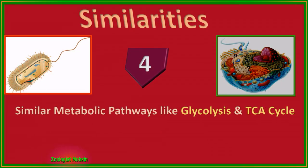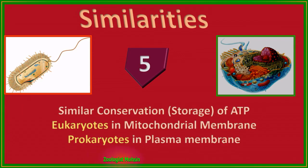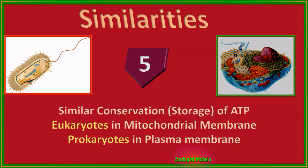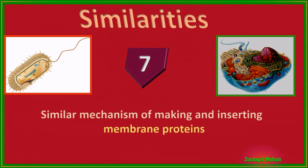Number three: both have similar transcription and translation processes and use ribosomes for translation. Number four: similar metabolic pathways are present in both, like glycolysis and the TCA cycle. Number five: both have similar conservation and storage of ATP. In eukaryotes, mitochondrial membranes are used for storage, while in prokaryotes the plasma membrane is used for storage.